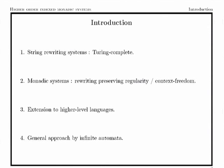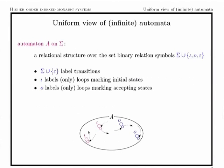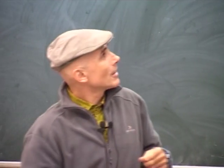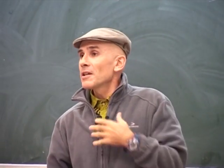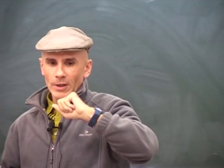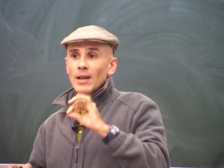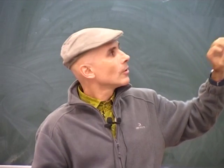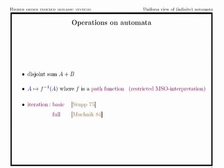What is interesting for us in this work is especially the use of some generalized model of automata, which is very simple. Our point is to avoid implementation details, because when we work with different automata models we always have to deal with some kind of memory, some pushdown store, etc. Here we view an automaton just as a structure with binary relations, and these binary relations label transitions with usual letters of the alphabet. We use two binary symbols — almost like a unary symbol — because we put some loops to indicate the initial states and the final states.